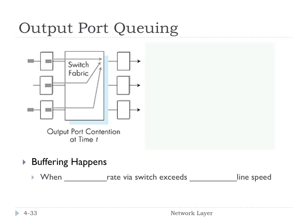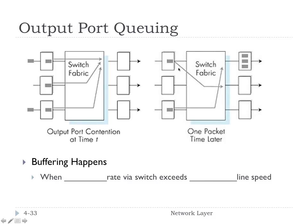Let's look at how output port queuing can happen. Imagine three input ports all switching across the switching fabric to one output port. If that output port can only send one of the three packets, it will have to buffer the other two. Buffering happens when the arrival rate via the switch exceeds the output line speed, causing queuing and therefore delay and possible loss due to buffer overflow. If a packet needs to be sent on an output link but the buffer is full, it will have to be dropped.